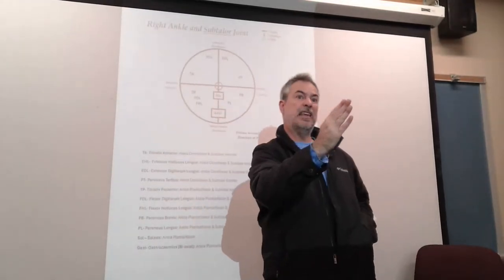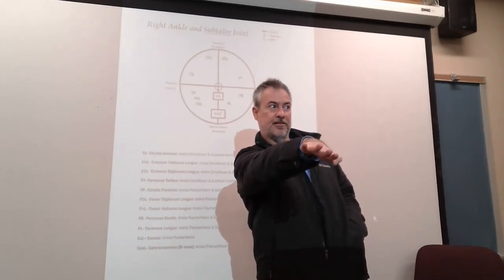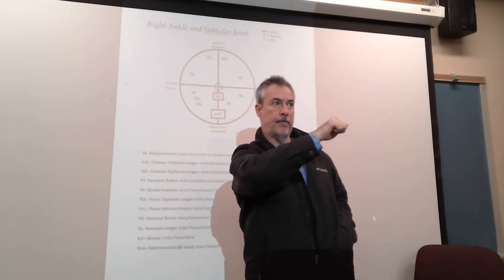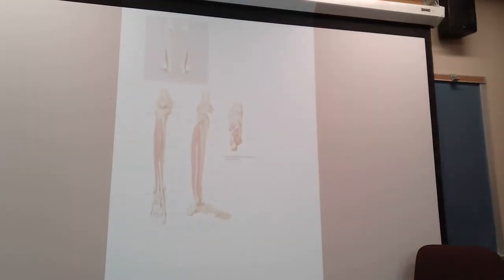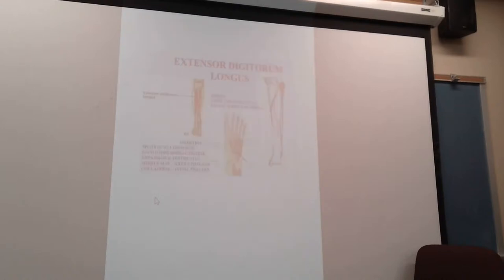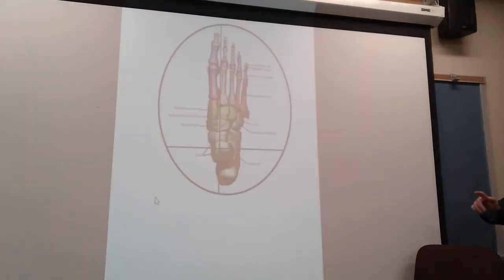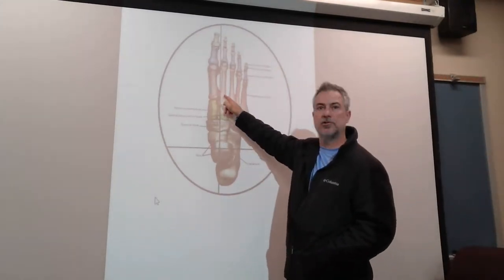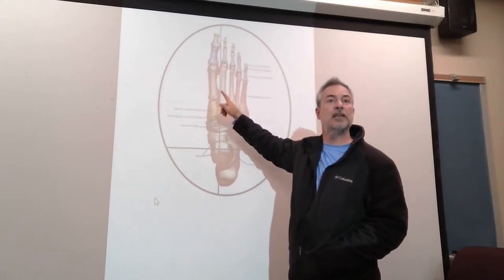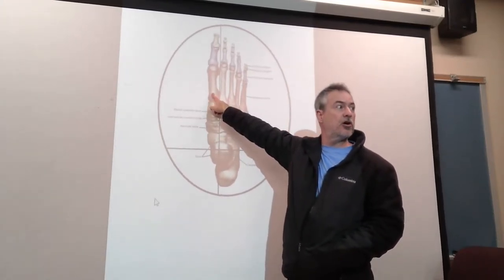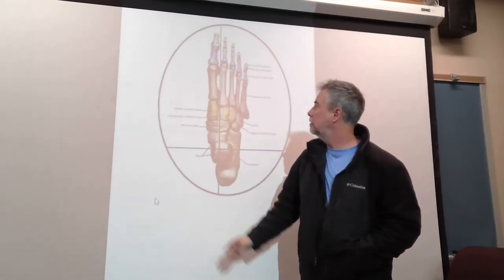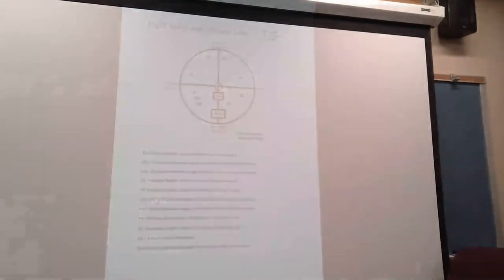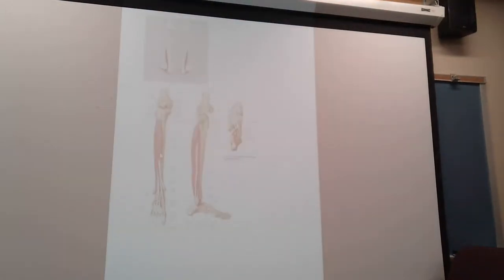So if we wanted to stretch the tibialis anterior, we'd want to evert and plantarflex. Here's another view of the tibialis anterior — I showed you how the subtalar AP axis actually falls in between the first two toes. There's a reason toe-off is a single toe: your big toe is when you toe off, not toes off. So the wobble for your teeter-totter actually happens in between the first and second toes.